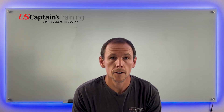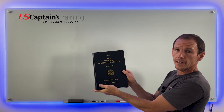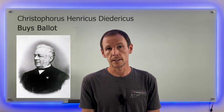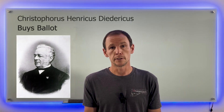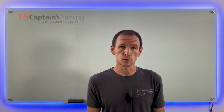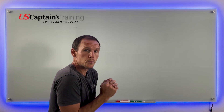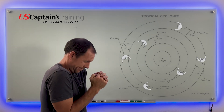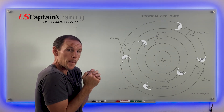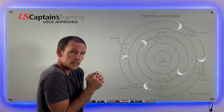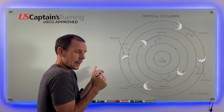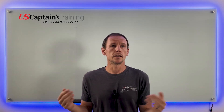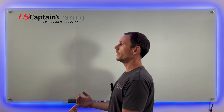Where does that come from? Right here in the book. Buys Ballot was a Dutch meteorologist — he was the man. He was a practitioner, that's why his back was to the wind, because he's out there in a rotating tropical storm taking cover, back to the wind, saying the center of low pressure is to the left because we're in the northern hemisphere.